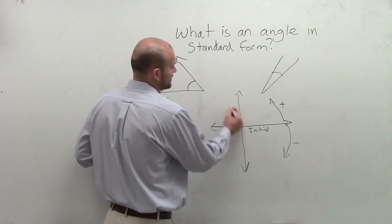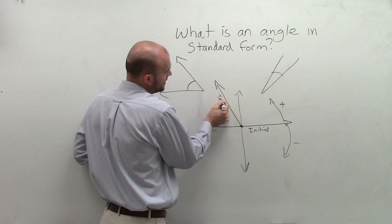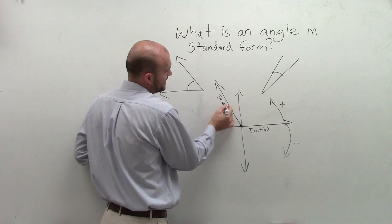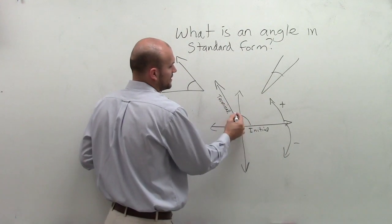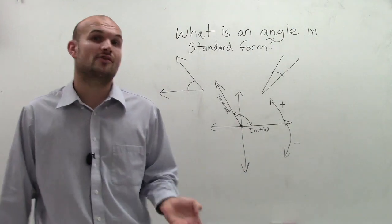And the other important thing to notice is that in standard form, you have an initial and you have a terminal side. And just like the definition of angle, the distance between our initial and our terminal side is going to be our value of an angle.